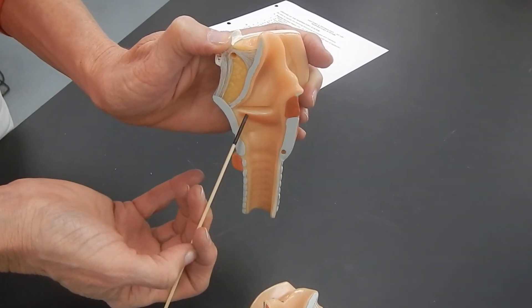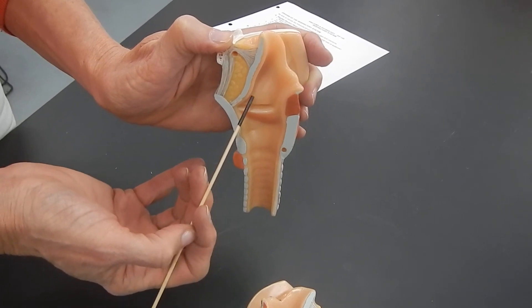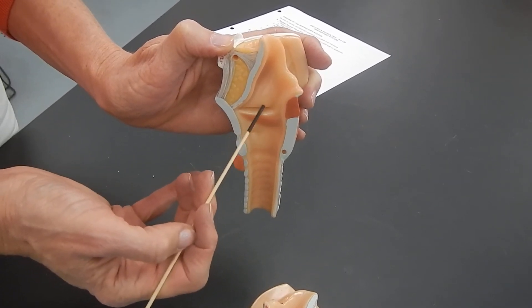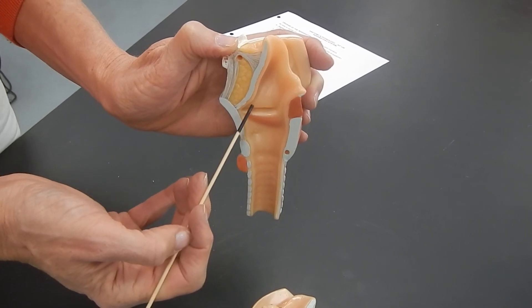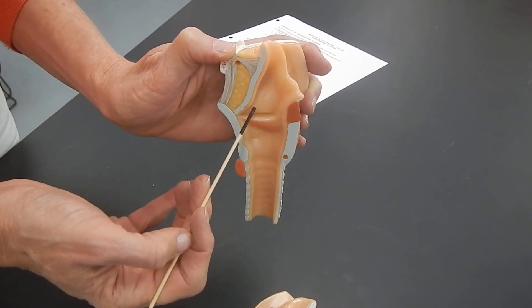And just superior to the vocal fold is the false vocal cord, which is also known as the vestibular fold.